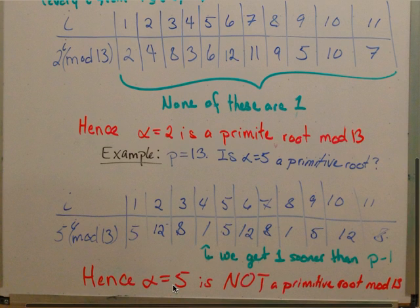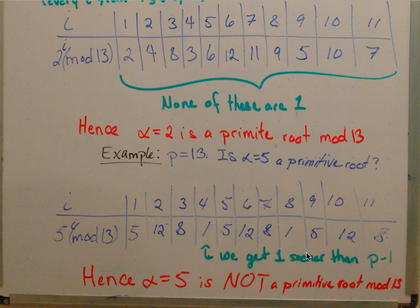Therefore, alpha equals 5 is not a primitive root mod 13.